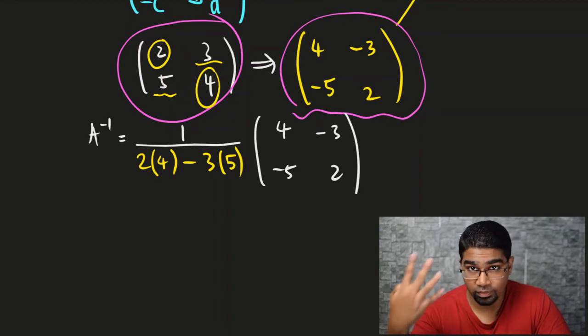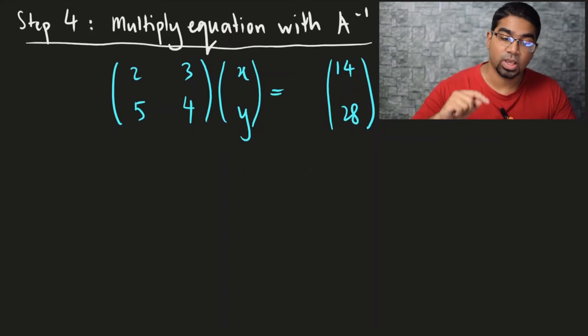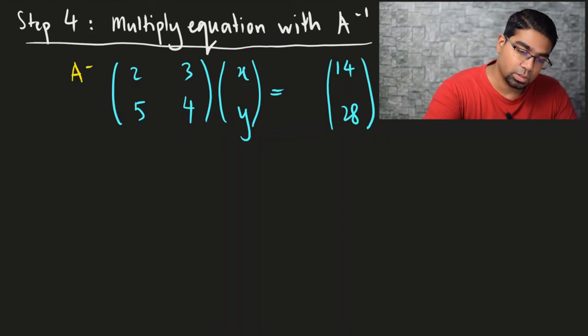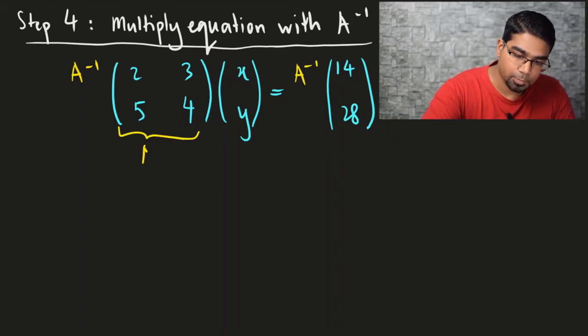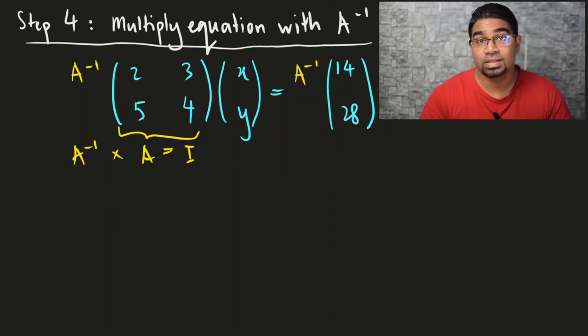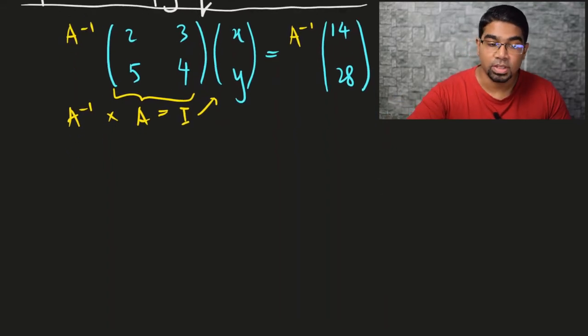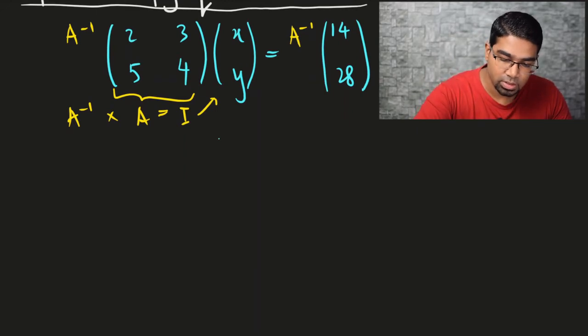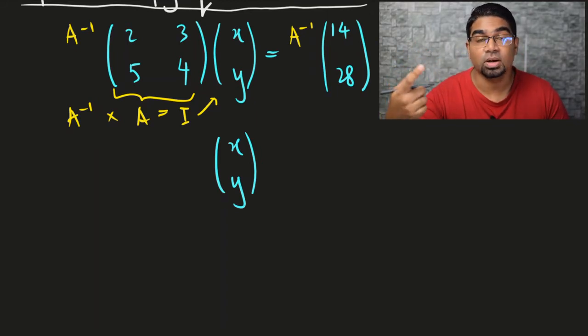Once we've done this, we can go to the fourth step. Step 4 is just to multiply both the left and right side of the equation with the inverse matrix that we just found in step 3. We take A inverse and multiply it on the left side of the equation as well as on the right side. This is A inverse and this is A — when you multiply A inverse into A, we will get the identity matrix. And of course, the identity matrix multiplied into [x, y] will just give you [x, y]. So what will be left on the left side of the equation is simply x, y — we've eliminated the whole thing by multiplying with the inverse.